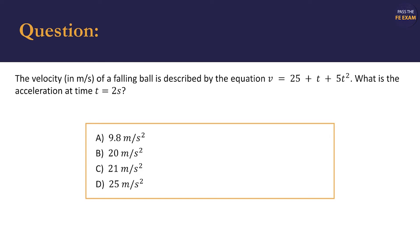In this example, we'll calculate the acceleration of a falling ball. You can expect to come across problems similar to this one on the FE Exam. The velocity in meters per second of a falling ball is described by the equation v equals 25 plus t plus 5t squared. What is the acceleration at time t equals 2 seconds?